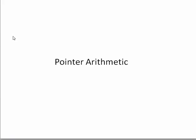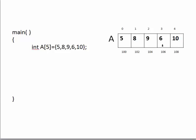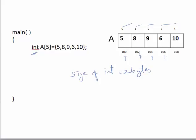In this video I will talk about arithmetic operations on pointers. For understanding different arithmetic operations, we will take one array as an example. Here is an array declared with some elements, these are the indices of locations in the array, and these are the addresses of the locations. Since this is an integer type array, the size of an integer is two bytes, so every integer takes two bytes, and these are the addresses.